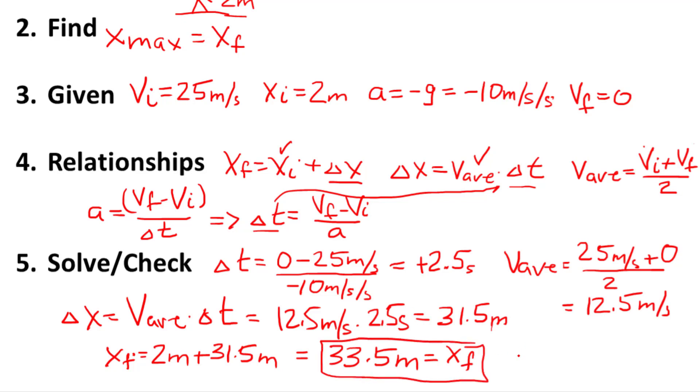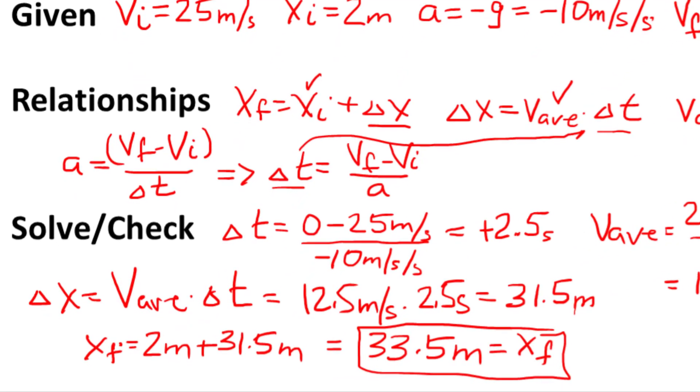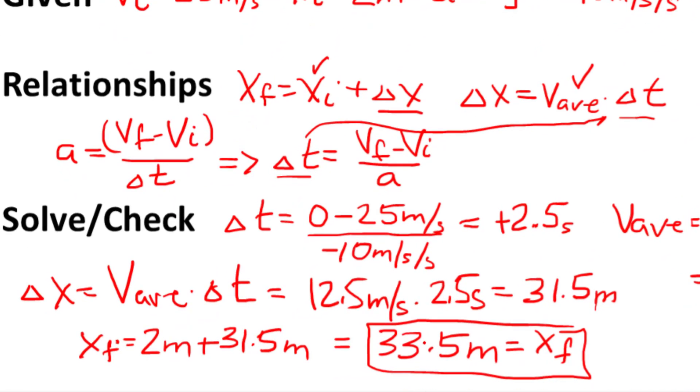Let's see if this is a reasonable answer. We have a positive value. Yeah, if I throw the ball up, it goes in a positive direction. Now, how about the amount? 33 meters is about a little bit more than 100 feet.